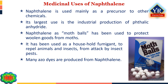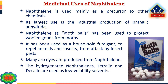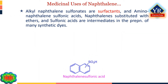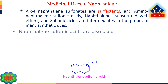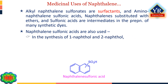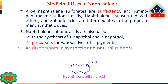Many azo dyes are produced from naphthalene, as is the insecticide 1-naphthyl N-methylcarbamate, also known as carbaryl. The hydrogenated naphthalenes tetralin and decalin are used as low-volatility solvents. Alkyl naphthalene sulfonates are surfactants, and aminonaphthalene sulfonic acids, naphthalene substituted with ethers and sulfonic acids, are intermediates in the preparation of many synthetic dyes. Naphthalene sulfonic acids are also used in the synthesis of 1-naphthol and 2-naphthol.